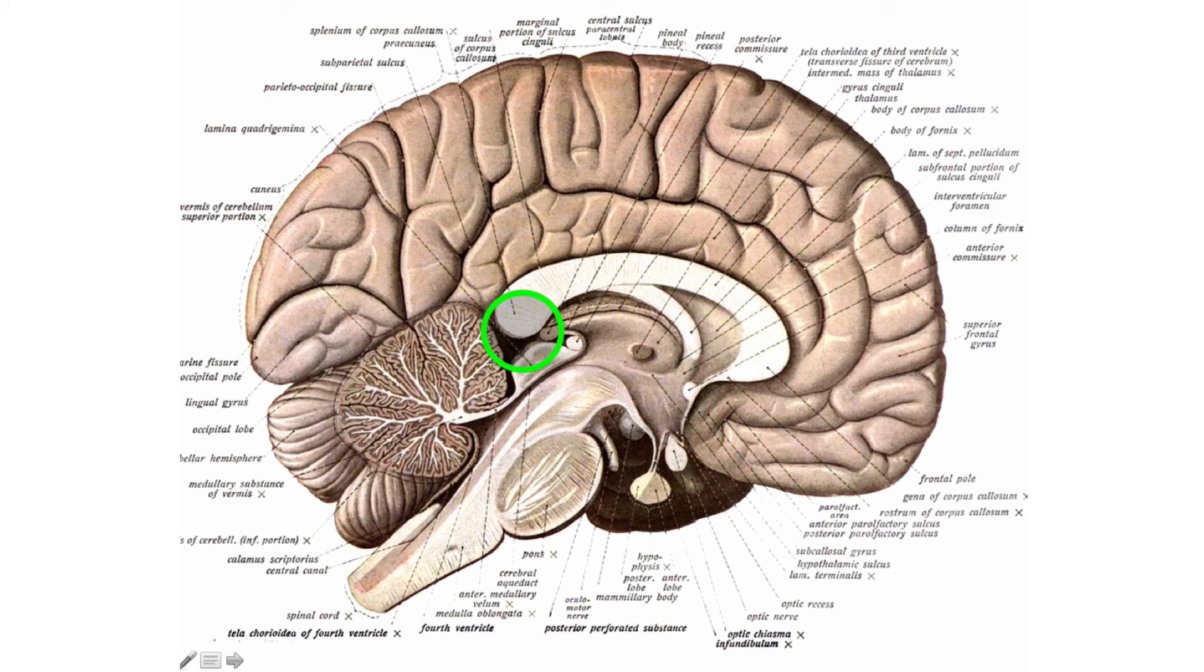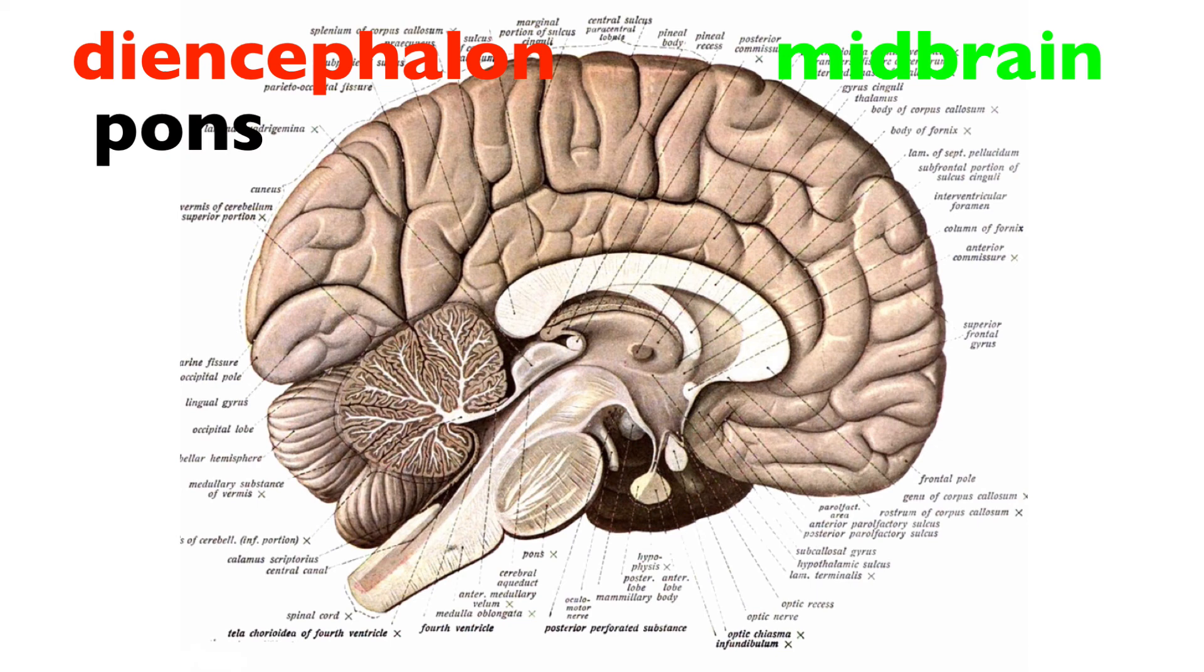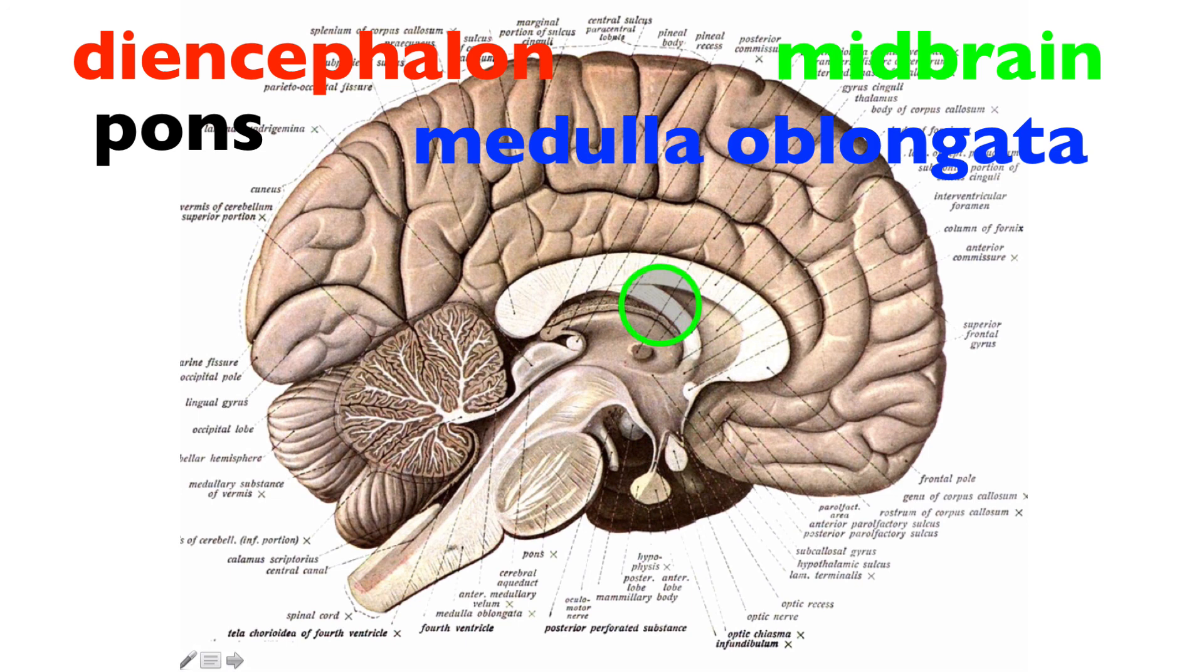Cerebellum. Now let's take a look at the brain stem. The brain stem includes, depending on what book or lecture you are listening to, but we're going to suggest it includes the diencephalon, the midbrain, the pons, and the medulla oblongata. So immediately inferior to the fornix in this region right here is the diencephalon.